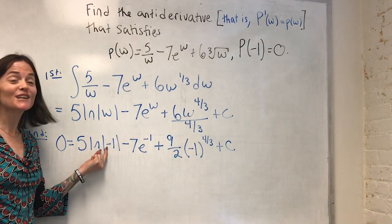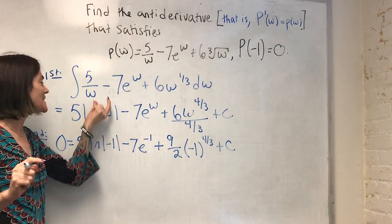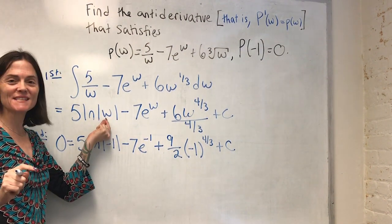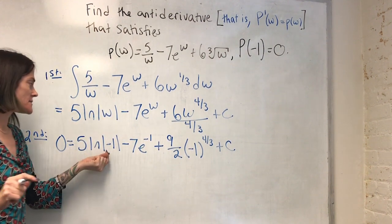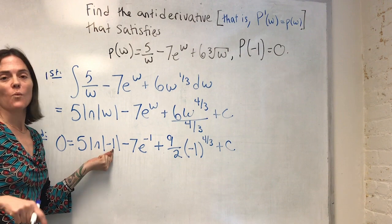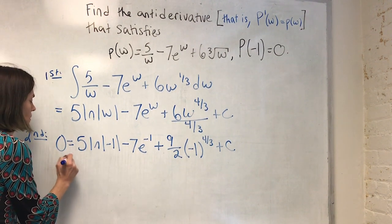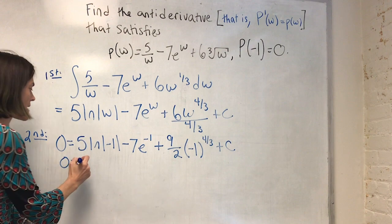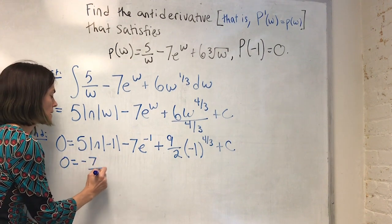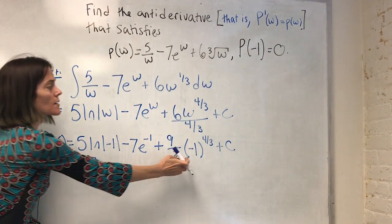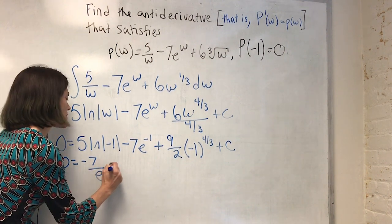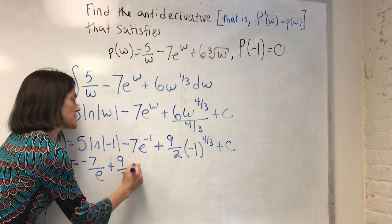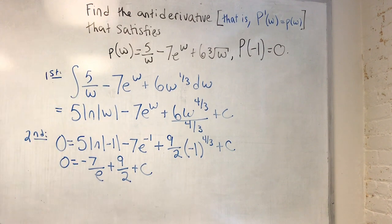Now here, and looking at this is exactly why we need the absolute values here when we integrate one over w. Because this is the ln of one, which is zero. And here I have negative seven over e. And then here minus one to the fourth gives you one. Cube root of that is also one. So I just have nine halves plus c. Now I can easily solve for c.